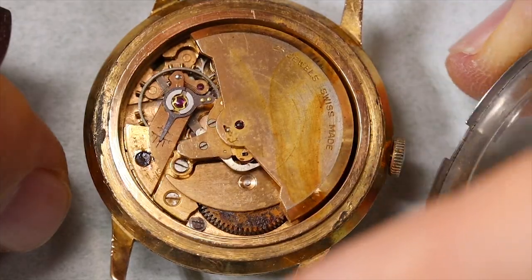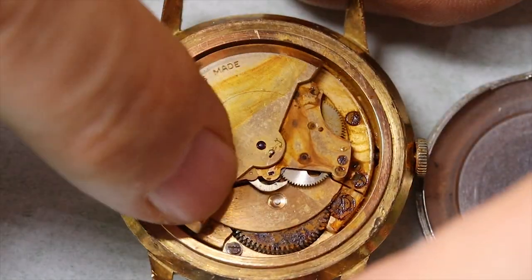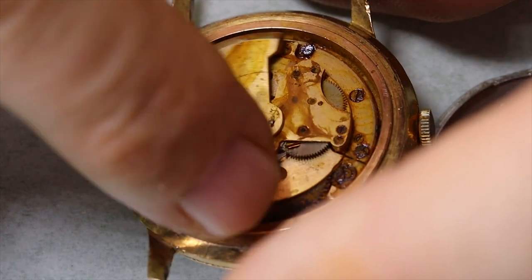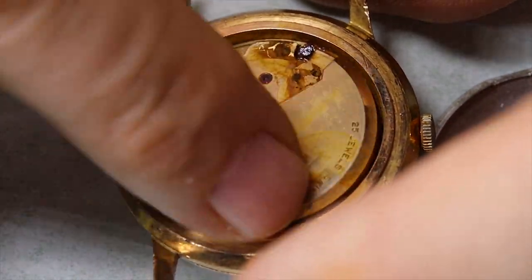Let's open it and see what's hiding inside. Oh, and this is how we can tell it's a diver's watch - it's got a lot of water inside.